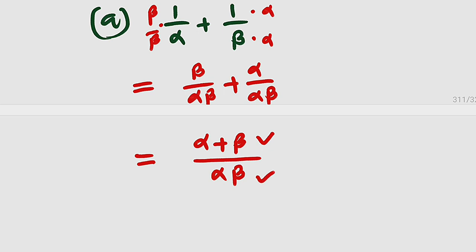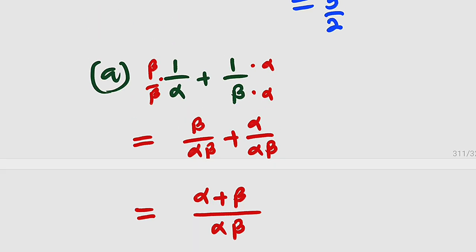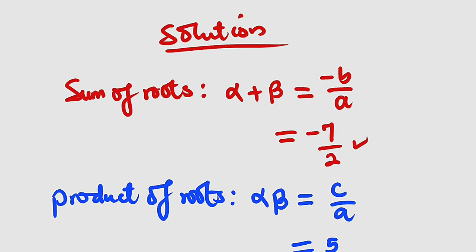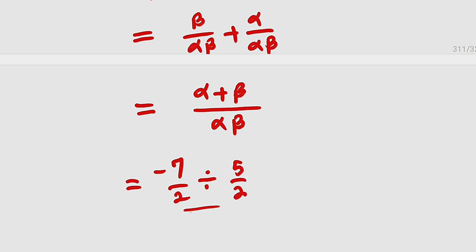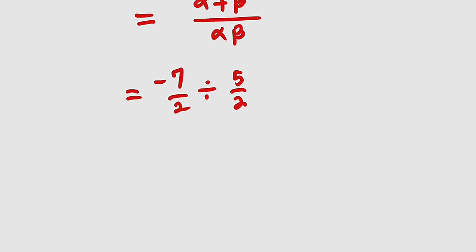You can see this is the sum divided by the product. Always try to transform your expression in terms of sum and product. Now we back substitute. The sum is negative 7 over 2 and the product is 5 over 2. Since they have the same denominators, we can cancel them and divide the numerators. Finally, we have negative 7 divided by 5, and hence this is the solution to the first problem.